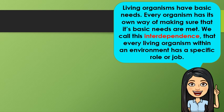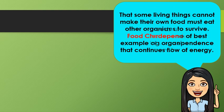Living organisms have basic needs, and every organism has its own way of making sure that its basic needs are met. We call this interdependence — every living organism within an environment has a specific role or job. Some living things cannot make their own food and must eat other organisms to survive. The food chain is one of the best examples of interdependence, showing the continuous flow of energy.